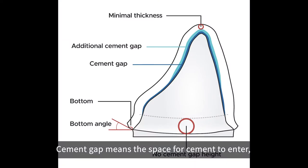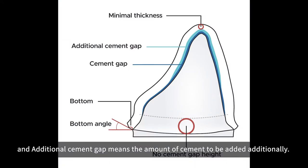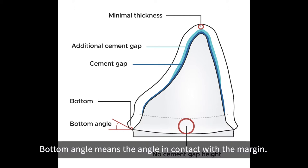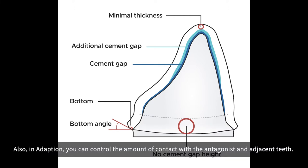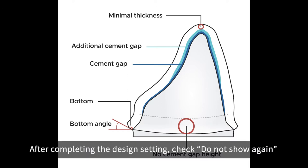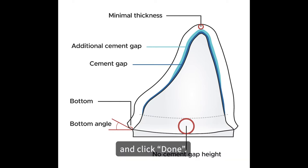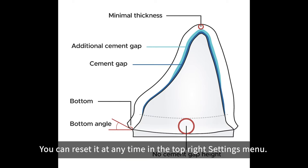Minimal thickness, cement gap means the space for cement to enter, and additional cement gap means the amount of cement to be added additionally. The angle in contact with the margin is also in adoption. You can control the amount of contact with the antagonist and adjacent teeth. After completing the design settings, check 'Do not show again' and click Done. You can reset it at any time in the top right settings menu.